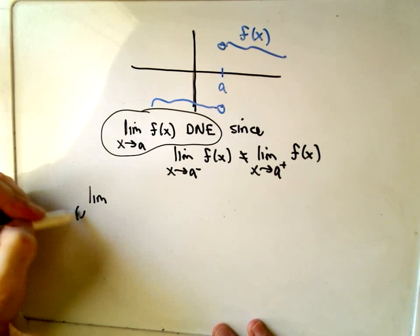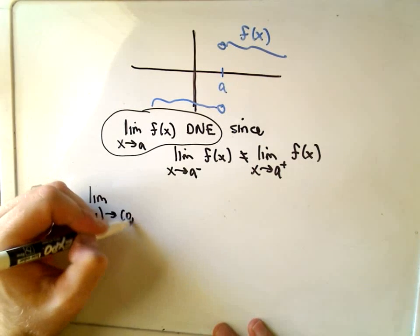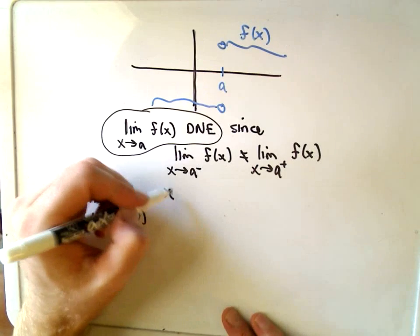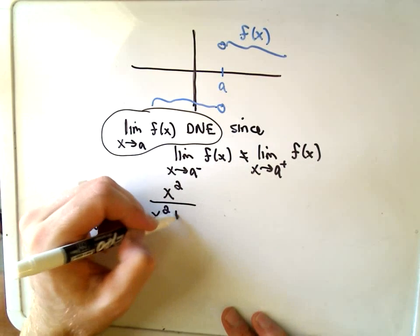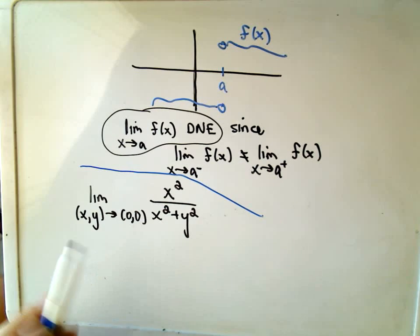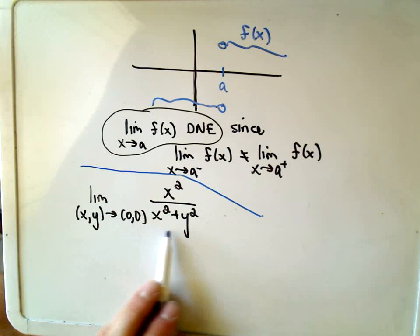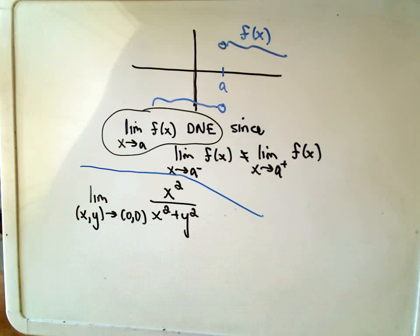So suppose in my example, let's look at the limit as x, y approaches 0, 0. We'll do x squared over x squared plus y squared. Notice in this case, if you just try to plug in x equals 0 and y equals 0, you're going to get something undefined. Okay, we'll get 0 over 0. So we're going to have to figure out a way to do that.